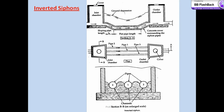These are inverted siphons. Whenever a sewer pipe has to be dropped below the hydraulic gradient line for passing it beneath a valley, a road, a railway, a stream, a tidal estuary, or any other depression in the earth's surface, or where it passes beneath some other obstruction in the path, it is known as an inverted siphon or a depressed sewer. The sewage through such a pipeline will not flow under gravity but will flow under pressure, as in the case of a water pipeline.